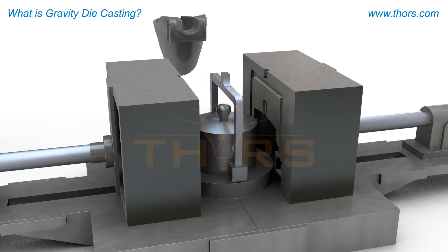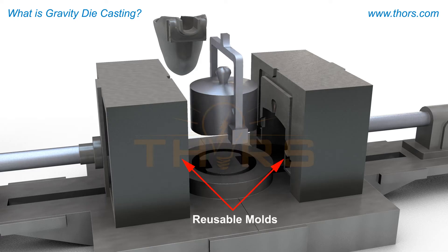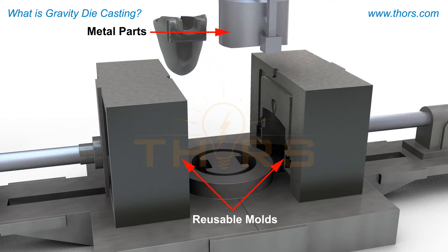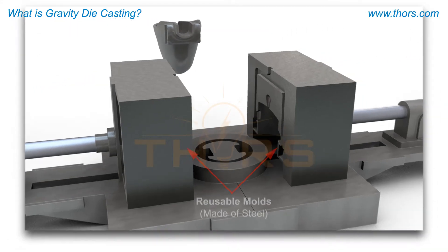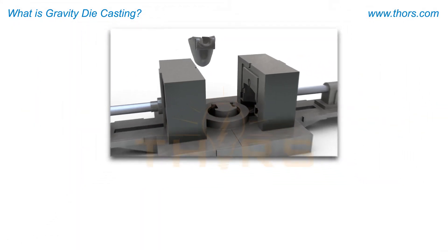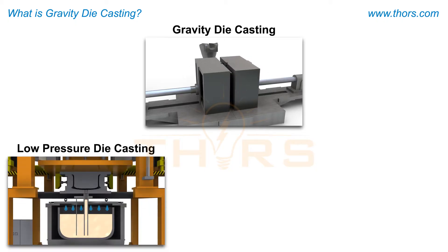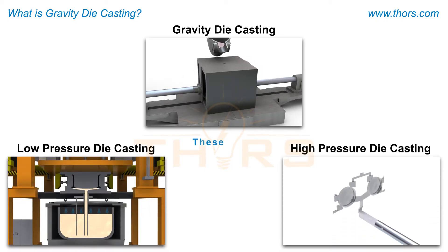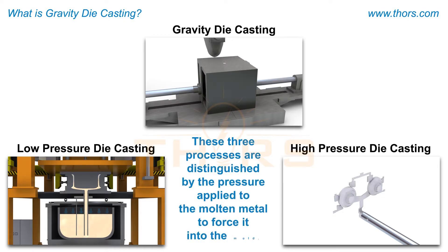Die casting is a metal casting technique that uses reusable molds to produce metal parts. The reusable molds are chiefly made of steel. The three types of die casting processes are gravity die casting, low-pressure die casting, and high-pressure die casting. These three processes are distinguished by the pressure applied to the molten metal to force it into the mold.